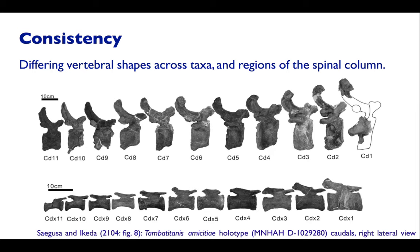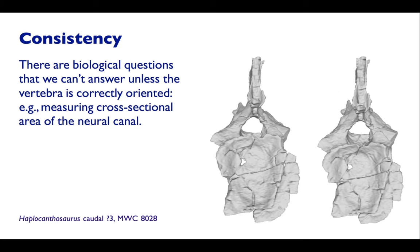It's even worse because you get differing vertebral shapes not only across taxa and regions of the spinal column, but even within the tail. In a caudal sequence from another sauropod, more cranial vertebrae have their articular surfaces vertical, but later in the sequence, getting the horizontal axis to look right requires those facets to be somewhat tilted. This is also a question of biological significance — if we want to answer questions like what's the cross-sectional area of the neural canal, we can only do that if we know what direction we need to look at the vertebra. Two copies of the same Haplocanthosaurus caudal vertebra show that the apparent cross-sectional area of the neural canal is very different just because one is rotated slightly away and the other slightly toward us. These are significant issues.